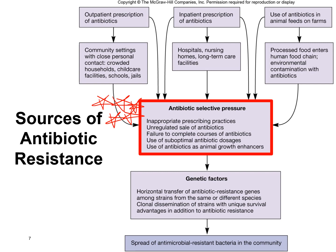Use of suboptimal antibiotic dosages is also a cause, more common in patients without good health insurance. A patient prone to frequent UTIs might take half the prescribed daily dose to save pills for a future infection. But taking only half the dose won't kill the infection — it leaves the more resistant bacteria to survive and reproduce, resulting in a resistant infection.